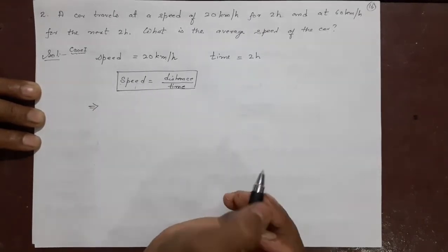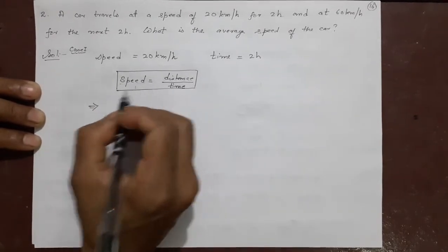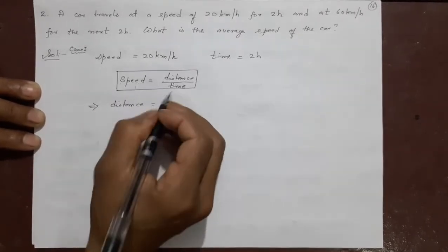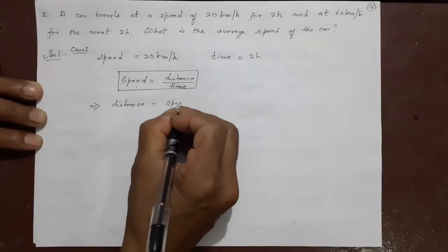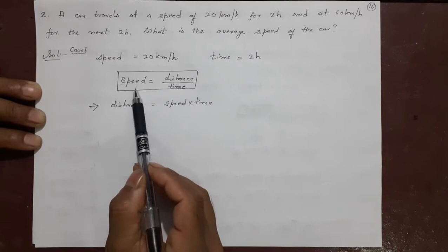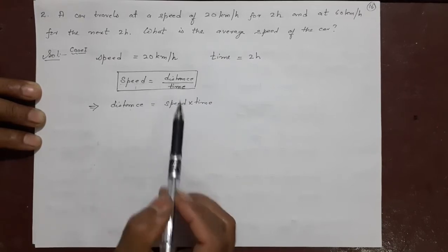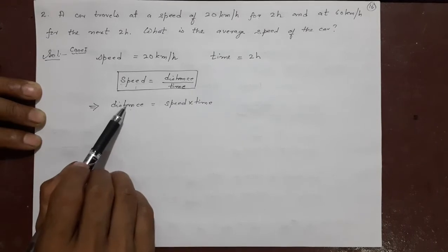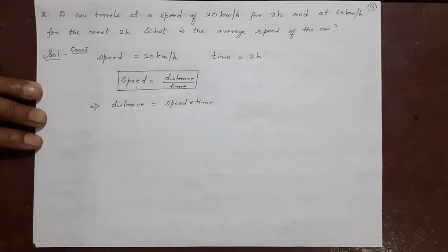Now, here is 1, right? You cross multiply. Distance equals speed into time. I hope you understand this is cross multiplication. Distance equals speed into time is multiplied. This is called cross multiplication. Why I do this? Because I need distance. Speed and time are given here. Let's put the value.